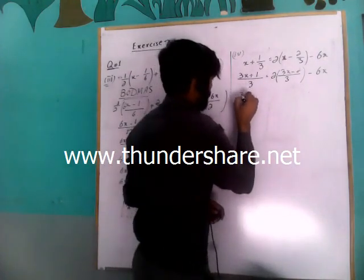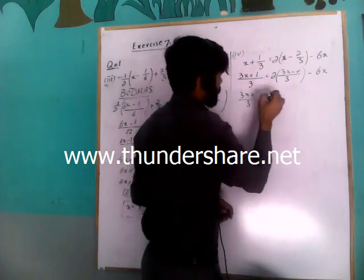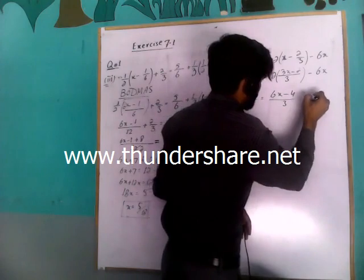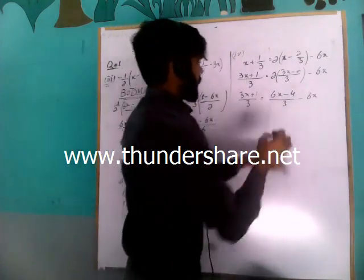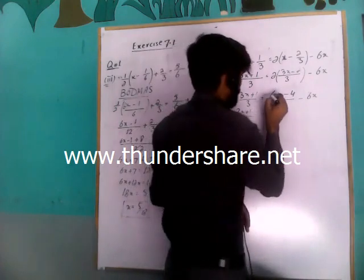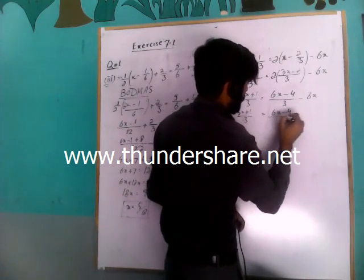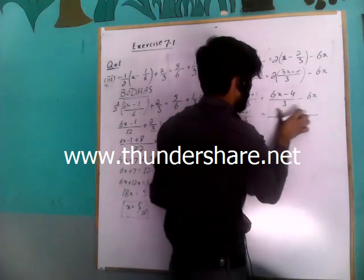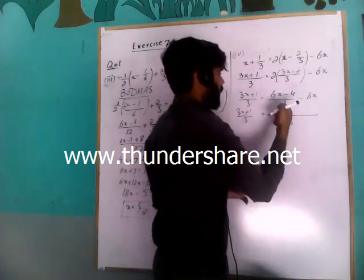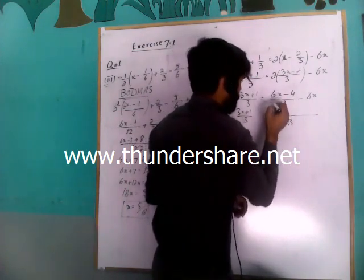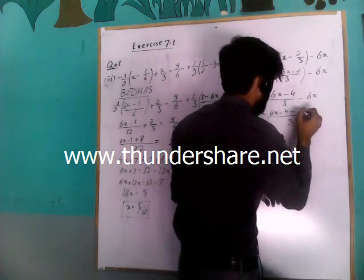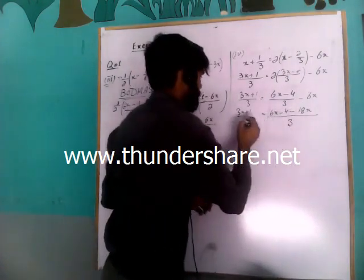We will multiply inside, giving 6x minus 4 over 3, minus 6x. Now from the left-hand side, 3x plus 1 over 3 comes as it is, and the right side is 6x minus 4 over 3. We will take LCM — LCM is 3. Dividing by the denominator of the first term: 3 divided by 3 gives 1, so 6x minus 4. Then 3 will multiply with 6x, giving 18x. Since the LCM is the same, we can cancel.